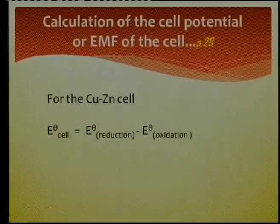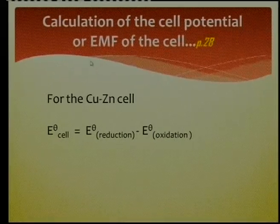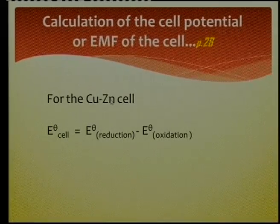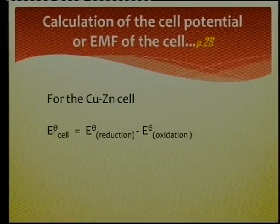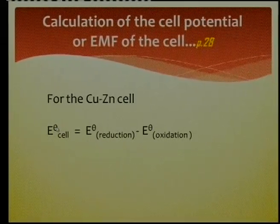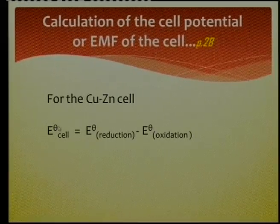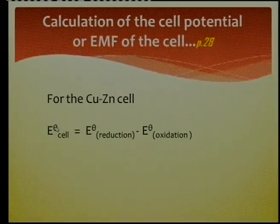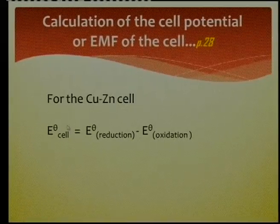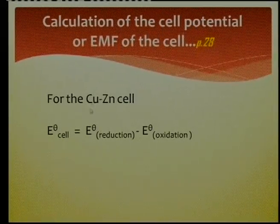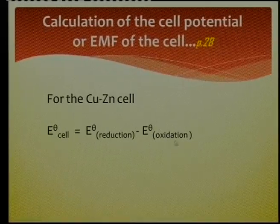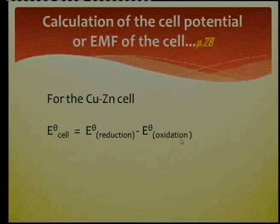Now we're going to calculate the cell potential, also called the electromotive force of the cell. The E° value — the zero means it was taken at standard conditions: 25°C, one mole concentration, and gas at one atmosphere. For this cell I have two half cells: the reduction cell value and the oxidation cell value, which I read from the tables.